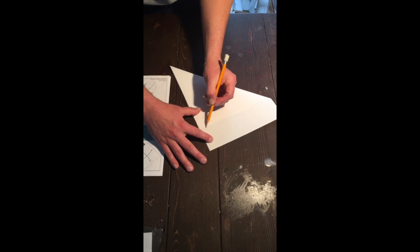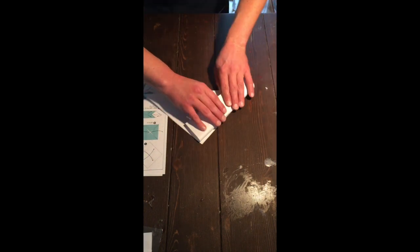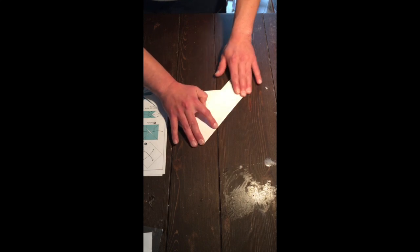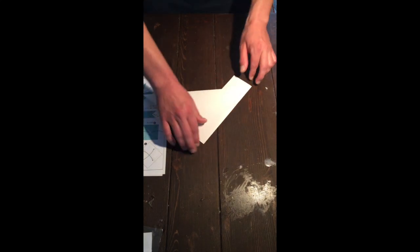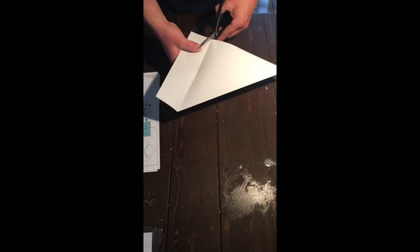And then we're going to mark this line where the paper touches because we've got to get rid of this extra little rectangle paper there. So you fold it over, make a nice crease that makes it easier to cut.